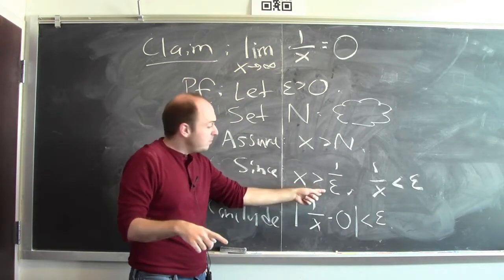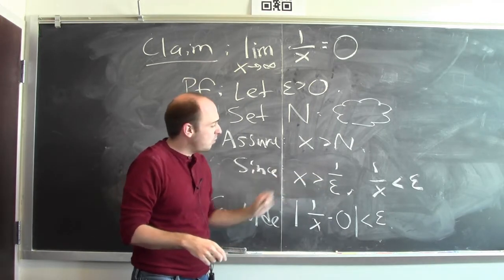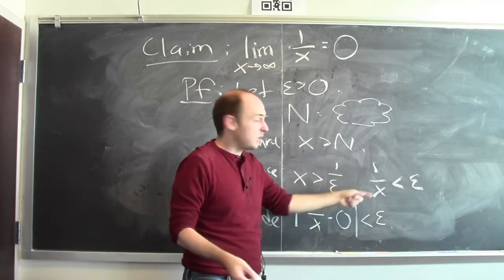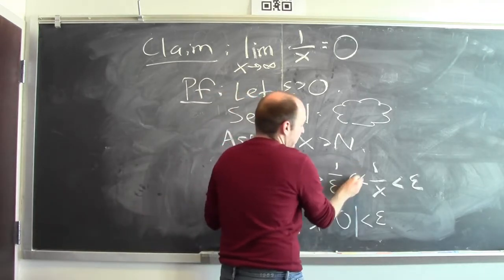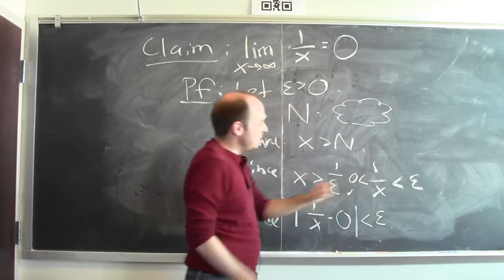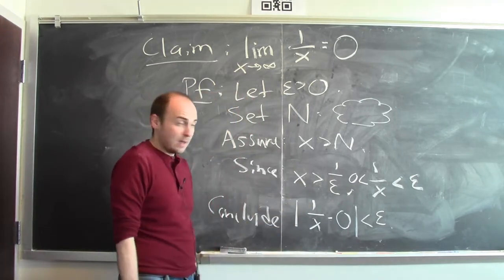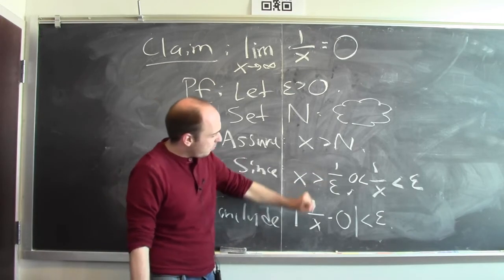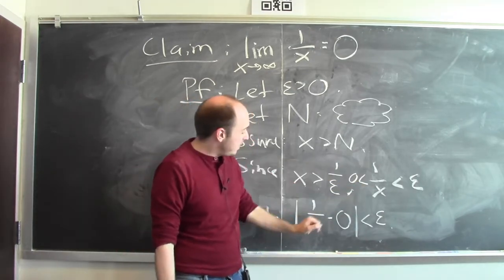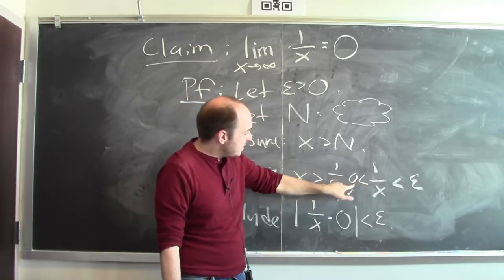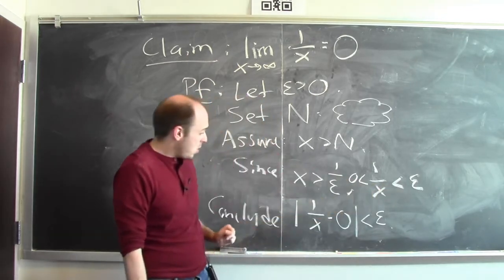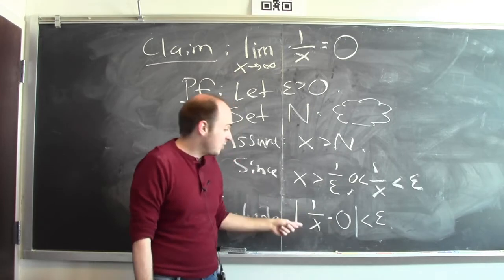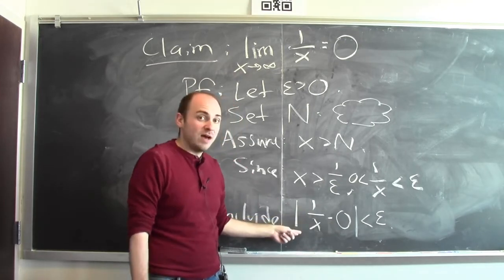Since this is true, 1 over x is smaller than epsilon. Epsilon is positive, so if x is bigger than 1 over epsilon, then x is also positive, and 1 over x is also positive. So 1 over x is in fact between 0 and epsilon. So if x is bigger than 1 over epsilon, then 1 over x is between 0 and epsilon, which means that 1 over x is between minus epsilon and epsilon, which is really what this absolute value statement is saying.